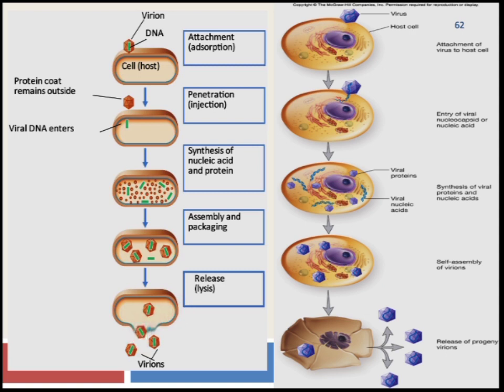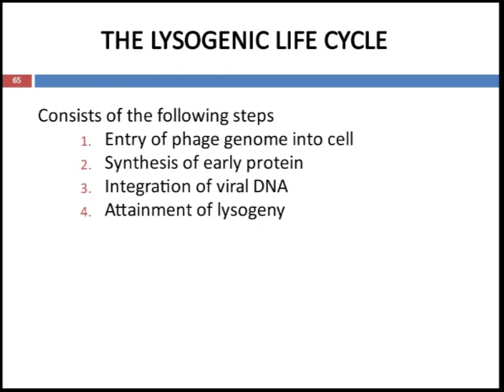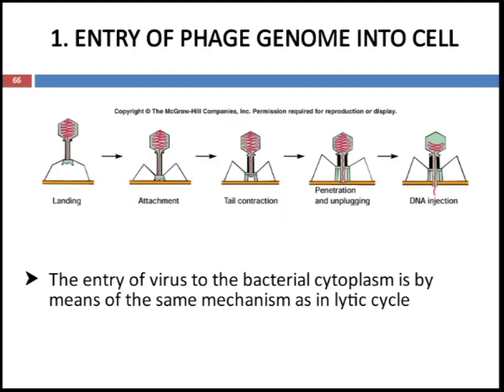Now coming to the lysogenic life cycle or temperate phases. Phages with double-stranded DNA usually will not destroy the bacterial cell. In this cycle, viral nucleic acid is integrated with the host cell genome and replicated from one generation to another without any cell lysis. An example is the association of lambda phage with E. coli. Most gene products of the lysogenic phage remain dormant until induced to enter the lytic cycle. The steps of the lysogenic cycle include: entry of phage genome into the cell, synthesis of early proteins, integration of viral DNA, and attainment of lysogeny.